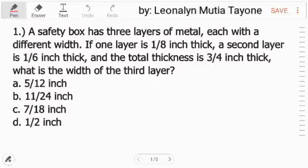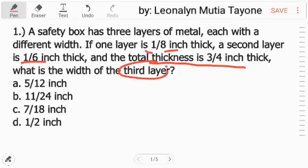Question number one. A safety box has three layers of metal, each with a different width. If one layer is 1/8 inch thick, a second layer is 1/6 inch thick, and the total thickness is 3/4 inch thick, what is the width of the third layer?